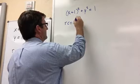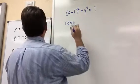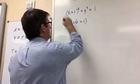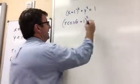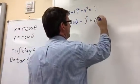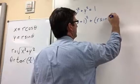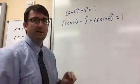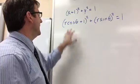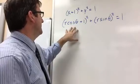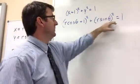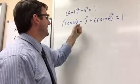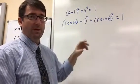So let's do that. x becomes r cosθ, so we have (r cosθ + 1)², and then y we replace with r sinθ, giving us (r sinθ)² on the other side.